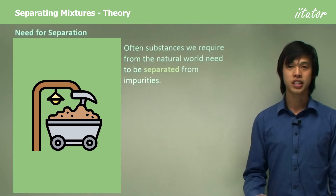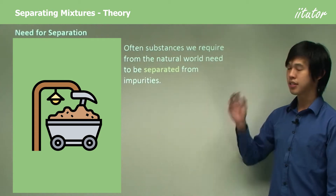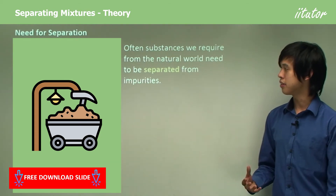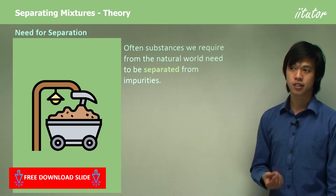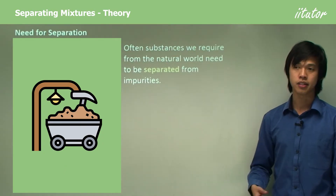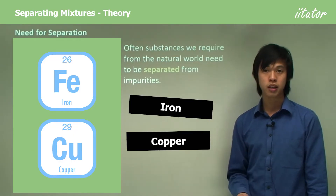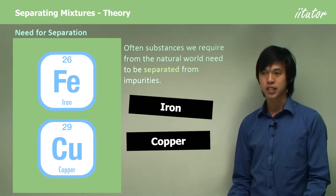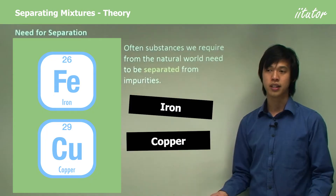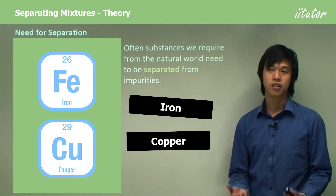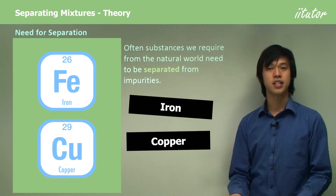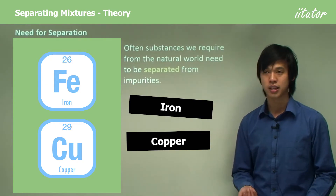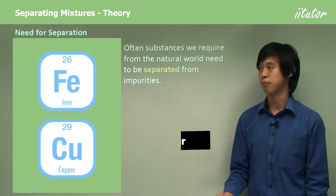So the need for separation — why do we actually need this process? Often substances that we want or need are bonded to other chemicals in the environment. For instance, you rarely find any metals like iron or copper just lying around in a lump on the ground. They're usually bonded to other things, so we need to be able to separate these things to get the iron or copper back. In previous lessons we've talked about aluminium refinement, and that's an example of how a mixture needs to be separated before we can get a useful product.